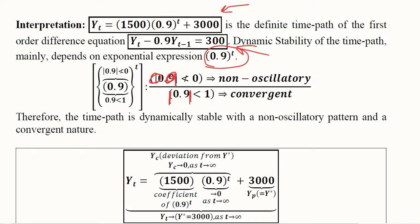In both of the cases, these are the values of b, not a, and we will consider these values to find out the pattern and the nature. The absolute value is less than 1, so it will be convergent. This is the actual value and it shows that it is non-negative, so it is a non-oscillatory time path.